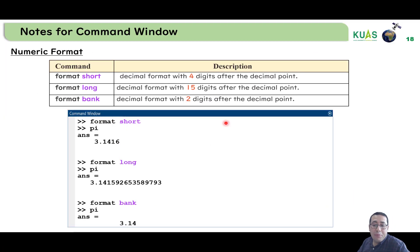The second type of format is the numeric format. In the numeric format, I selected only three types, which is format short, format long, and format bank. So format short, the decimal format has four digits after decimal point. And format long, instead of four, it would be 15. And format bank, it will be two.